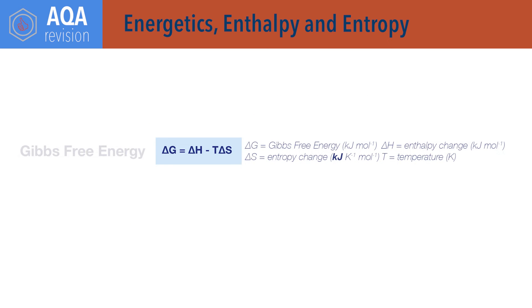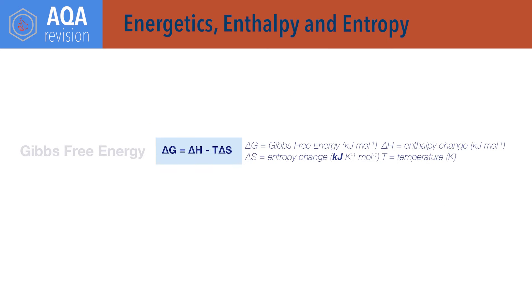Delta G equals delta H minus T delta S, where delta G is change in Gibbs free energy, kilojoules per mole, delta H is change in enthalpy, kilojoules per mole, T is temperature in Kelvin.